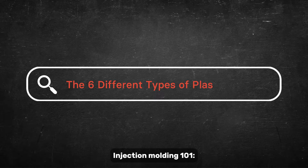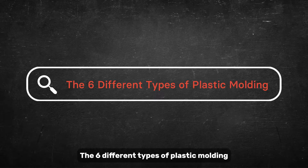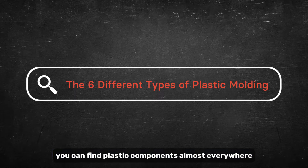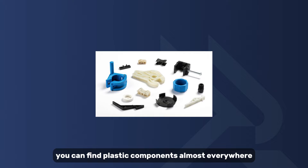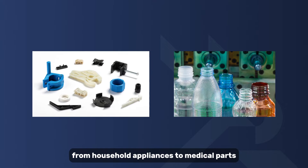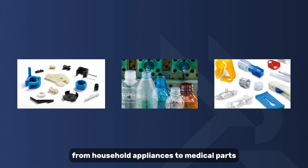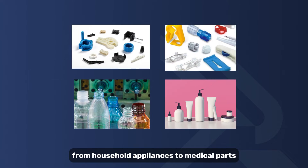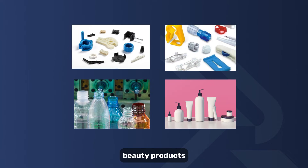Injection Molding 101: The Six Different Types of Plastic Molding. You can find plastic components almost everywhere — from household appliances to medical parts and packaging for beauty products.